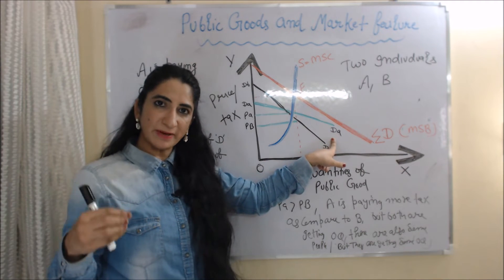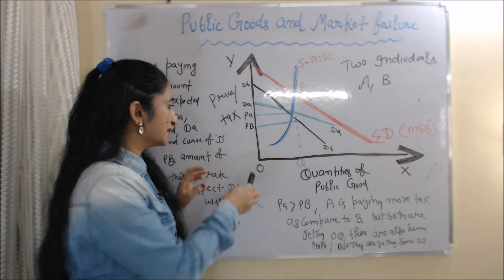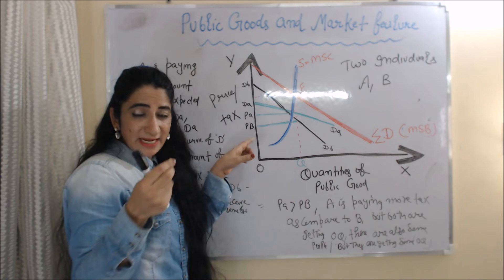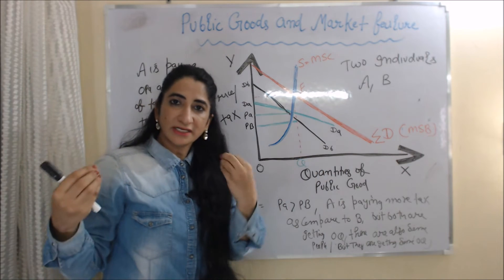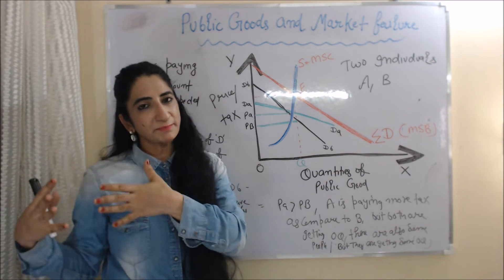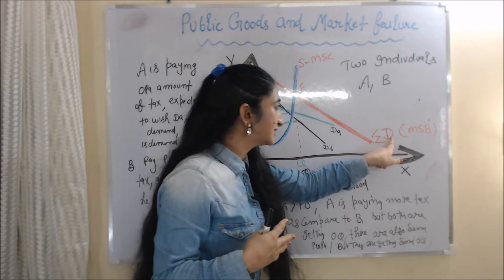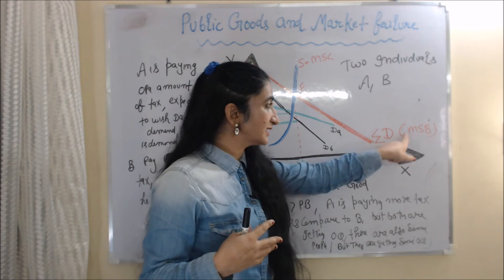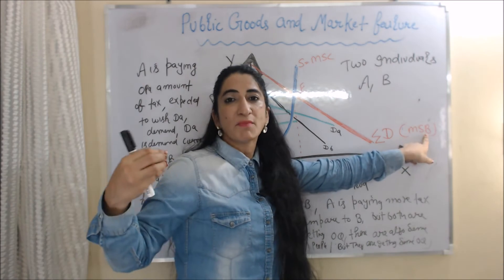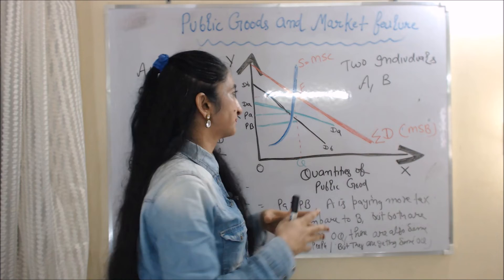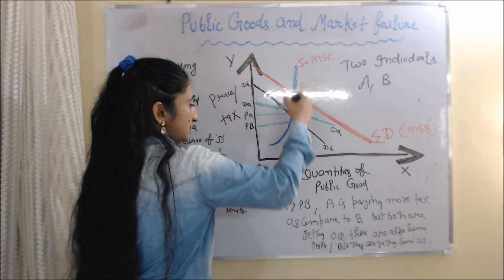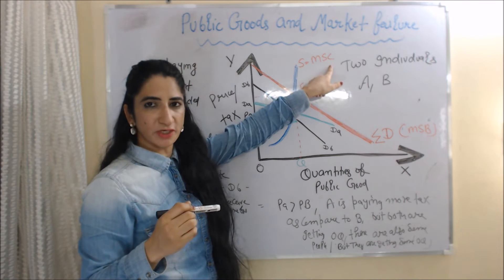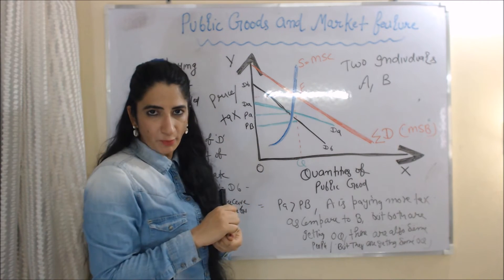So DA is the demand curve of person A. Person B is paying OPB amount of tax, and at this tax he expects demand DB. So DB is the demand curve of person B. Sigma D is the sum of DA and DB, and Sigma D is equal to MSB — marginal social benefit. The blue curve is the supply curve, equal to marginal social cost, and E is the equilibrium point.